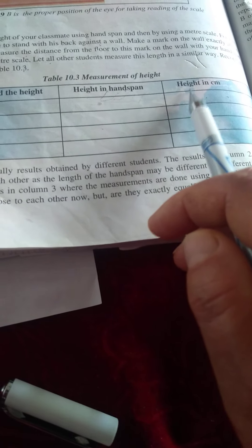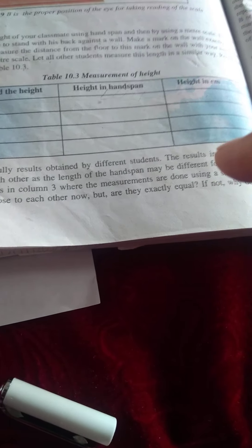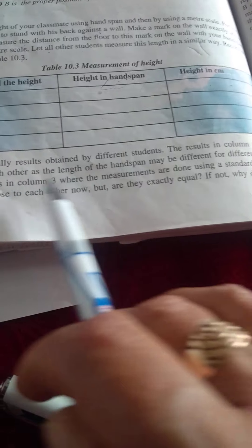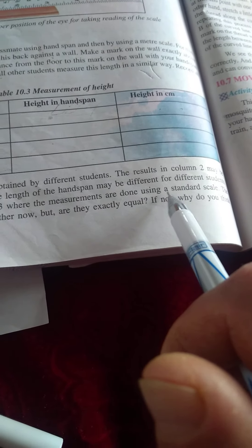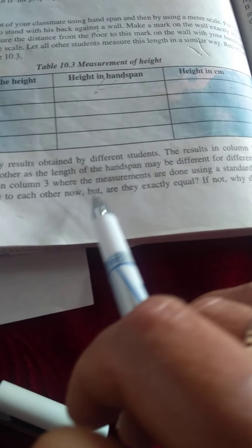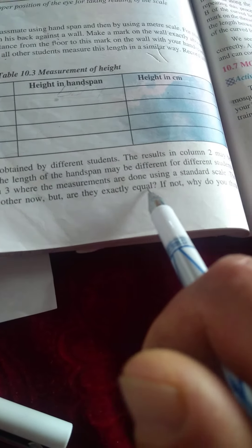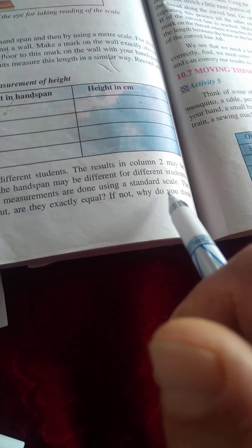In height in centimeters, it will be more correct. The results in column 3, where the measurements are done using a standard scale, the results may be close to each other now. But are they exactly equal? If not, why do you think there is difference?